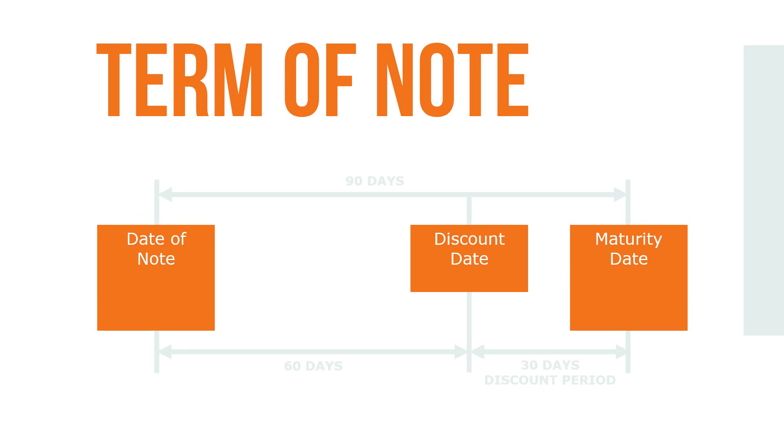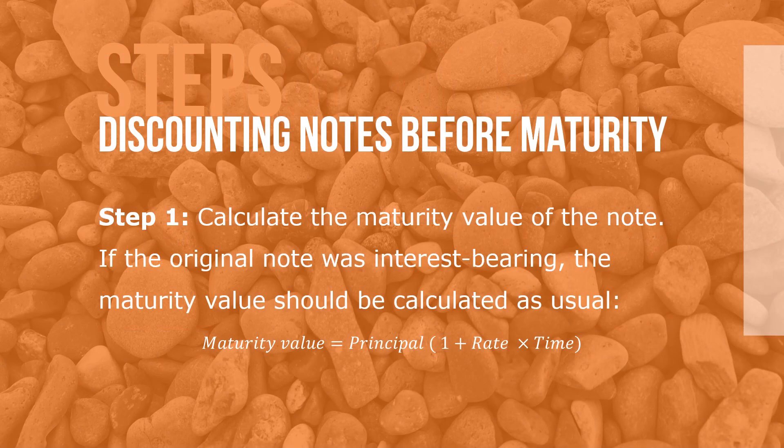This figure illustrates the timeline for a 90-day simple interest note discounted on the 60th day. Here are the steps for discounting notes before maturity.